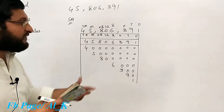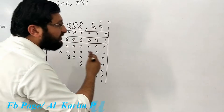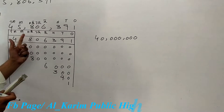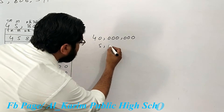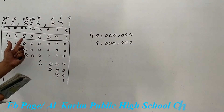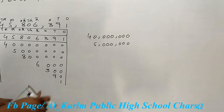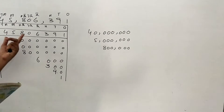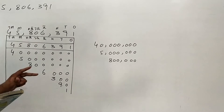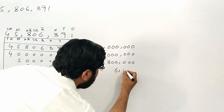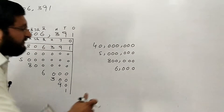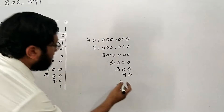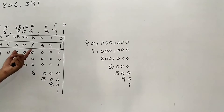Summary: 4 is in the ten millions place, 5 is in the millions place, 8 is in the hundred thousands place, 0 is in the ten thousands place, 6 is in the thousands place, 3 is in the hundreds place, 9 is in the tens place — that is 90 — and 1 is in the ones place. This is the place value of each digit.